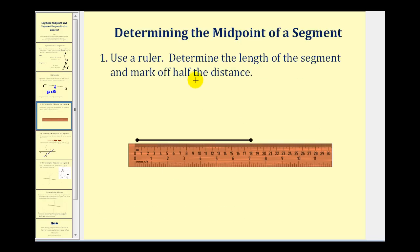Now let's take a look at some different ways to determine the midpoint of a segment. The first is with a ruler. Using a ruler, we measure the length of a given segment and then mark off half the distance. The length of this segment is eighteen centimeters — it starts at zero and stops at eighteen. Half of eighteen is nine, so if we mark off nine centimeters, that is the location of the midpoint. With endpoint L and endpoint O, segment LM is congruent to segment MO, meaning they're equal in length. We can mark these segments with one tick mark each to indicate they are equal in length.